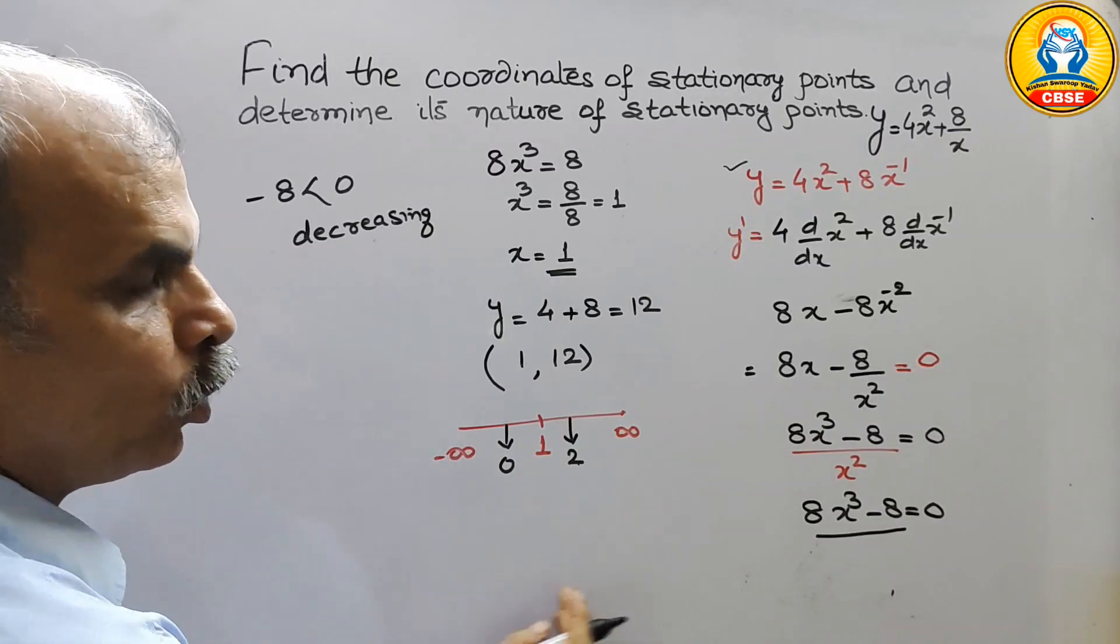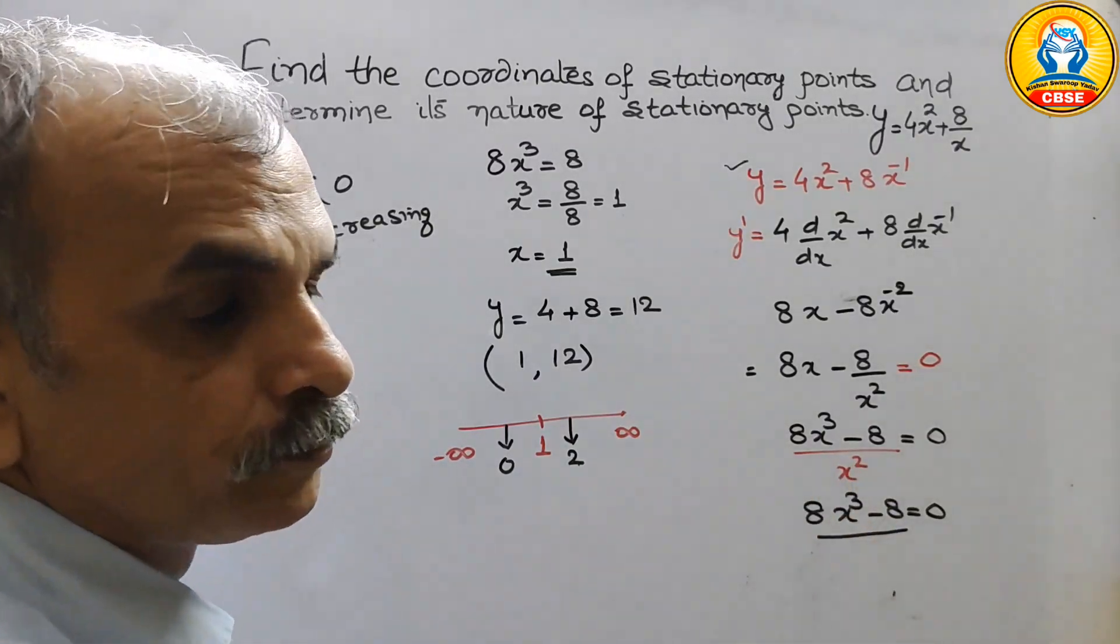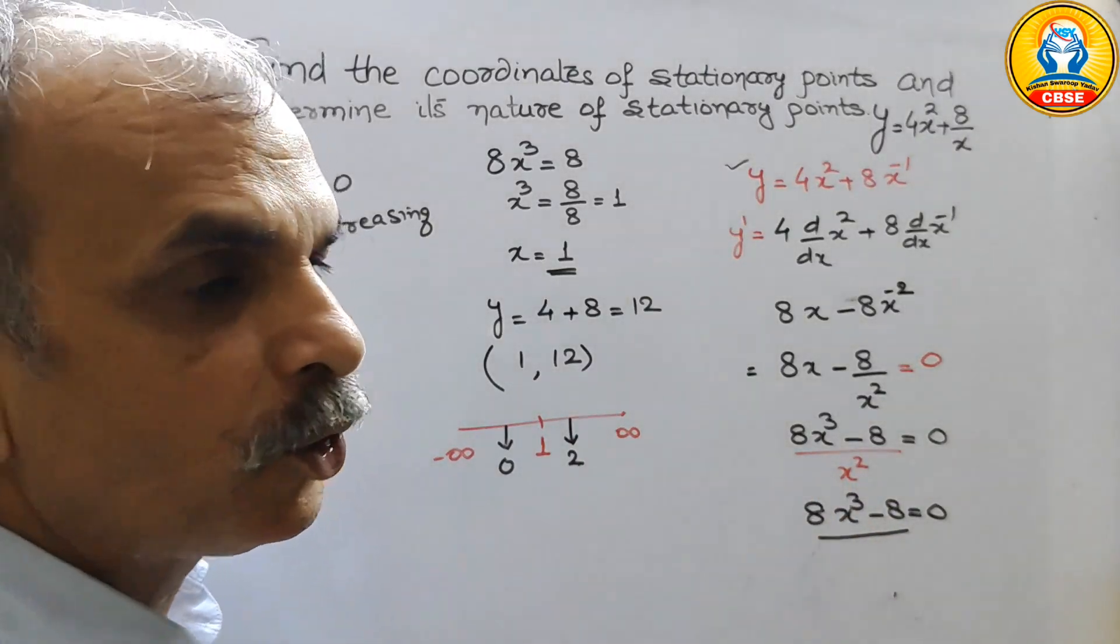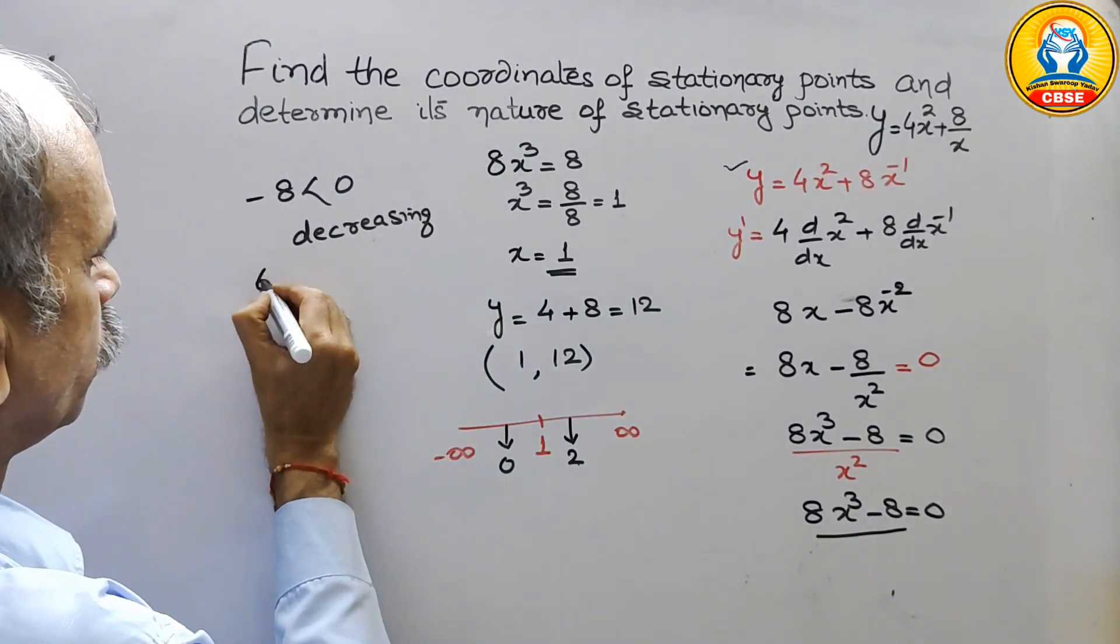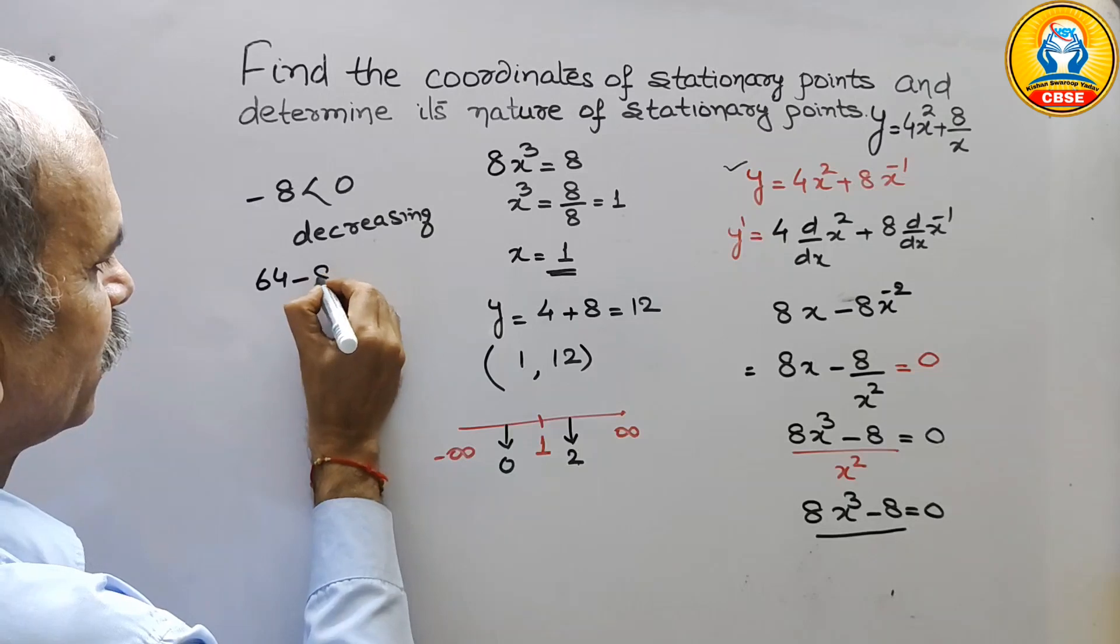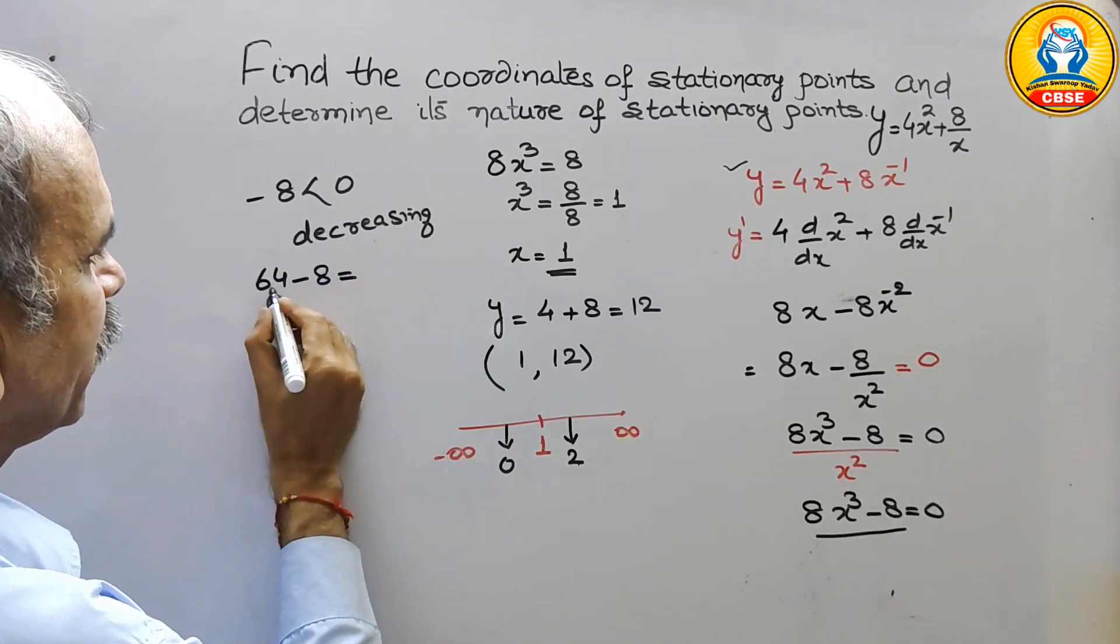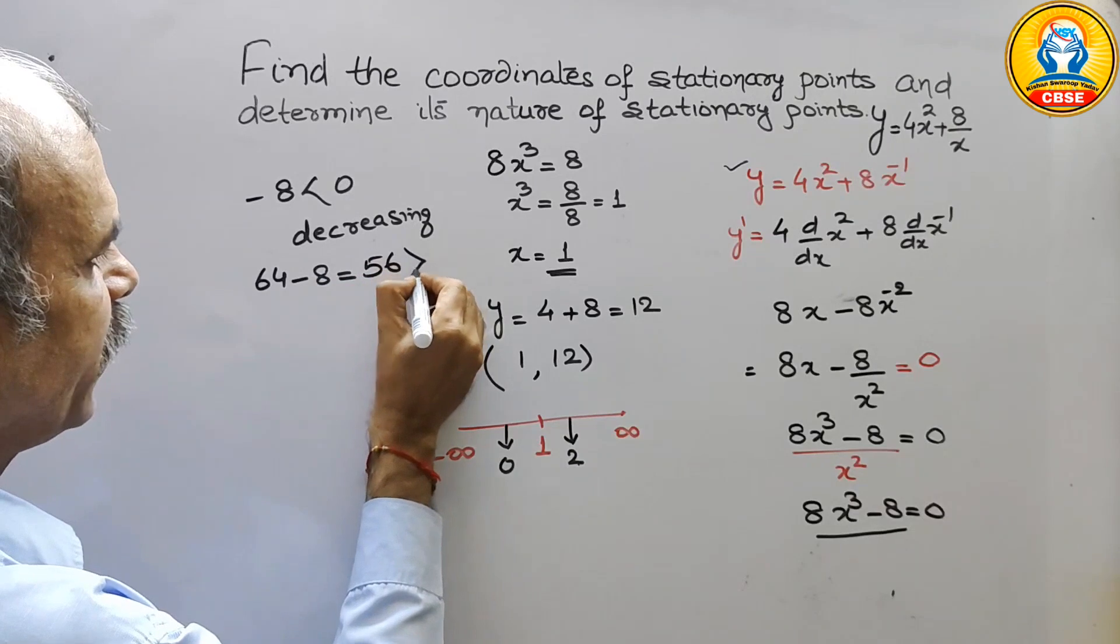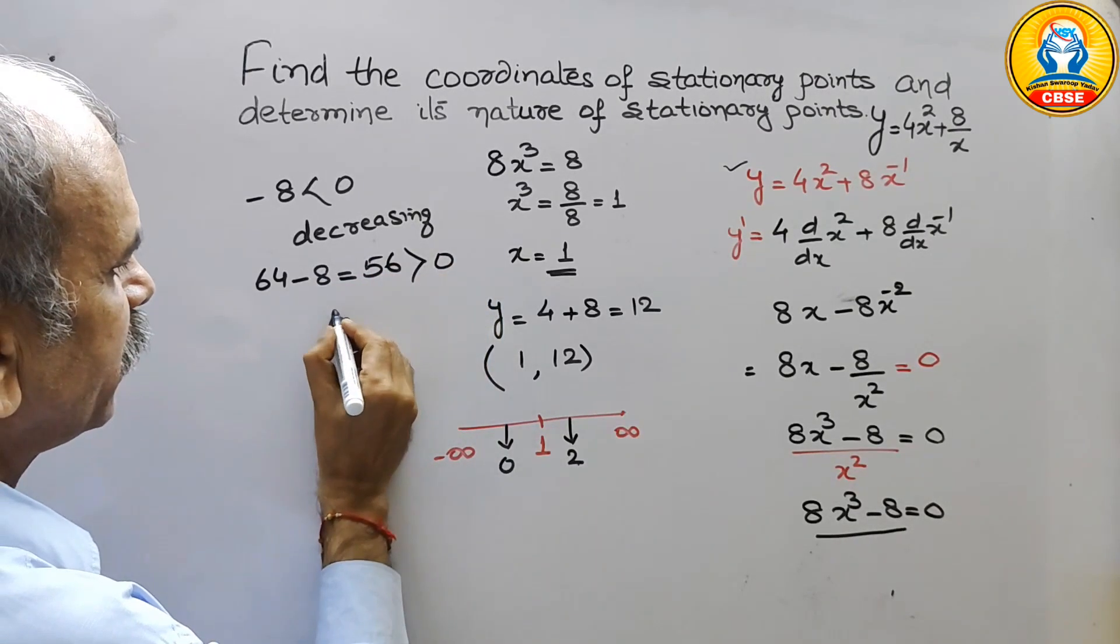Next we will take 2, so 2 cube is 8, 8 into 8 is 64 minus 8, so that is equal to 56 which is greater than 0 that means it is increasing.